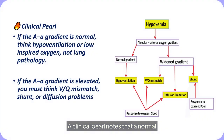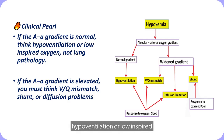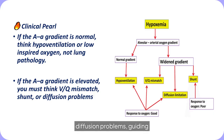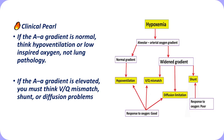Clinical Pearl: When interpreting hypoxemia, a normal alveolar-arterial oxygen gradient indicates that the alveolar-capillary interface is functioning properly and that the problem is reduced ventilation or reduced-inspired oxygen rather than intrinsic lung disease. An elevated gradient signifies impaired pulmonary gas transfer and should prompt consideration of ventilation-perfusion mismatch, pulmonary shunting, or diffusion limitation.